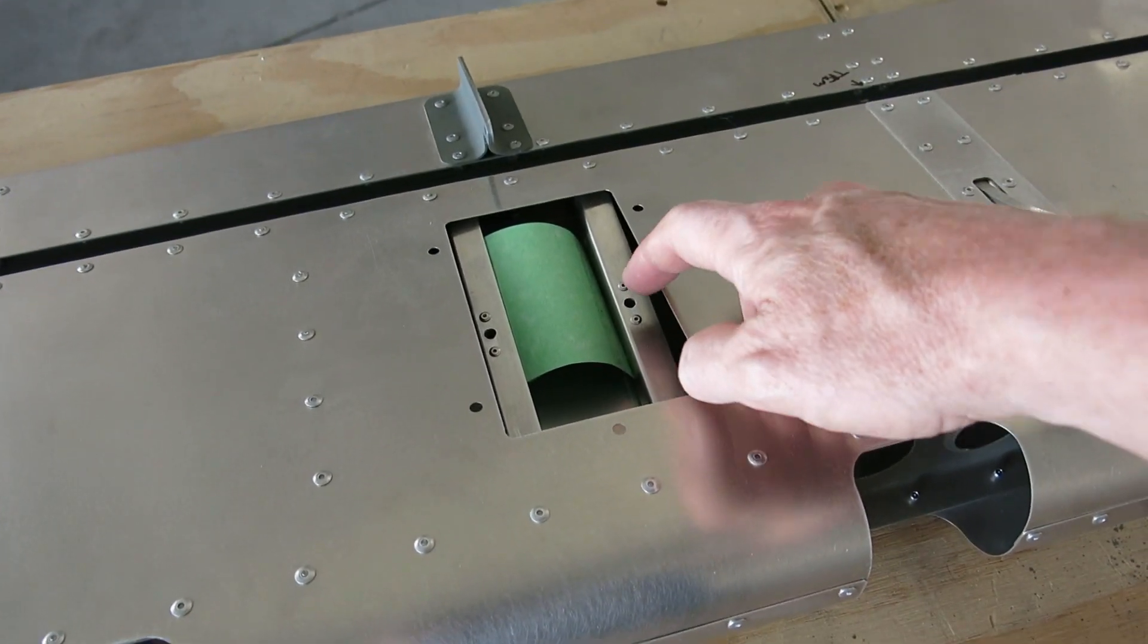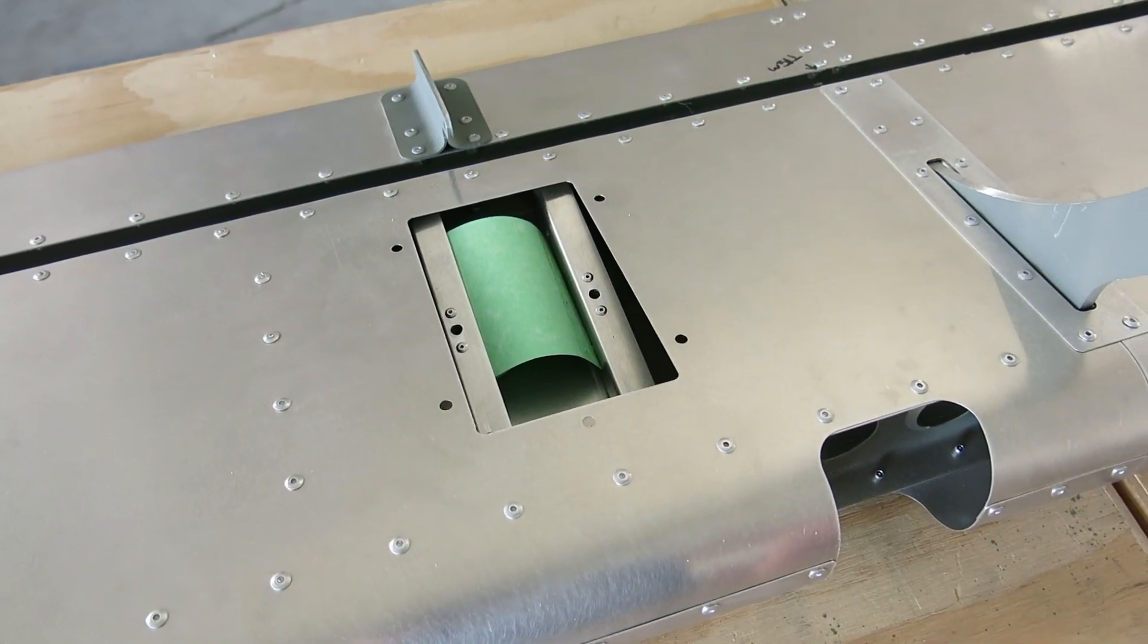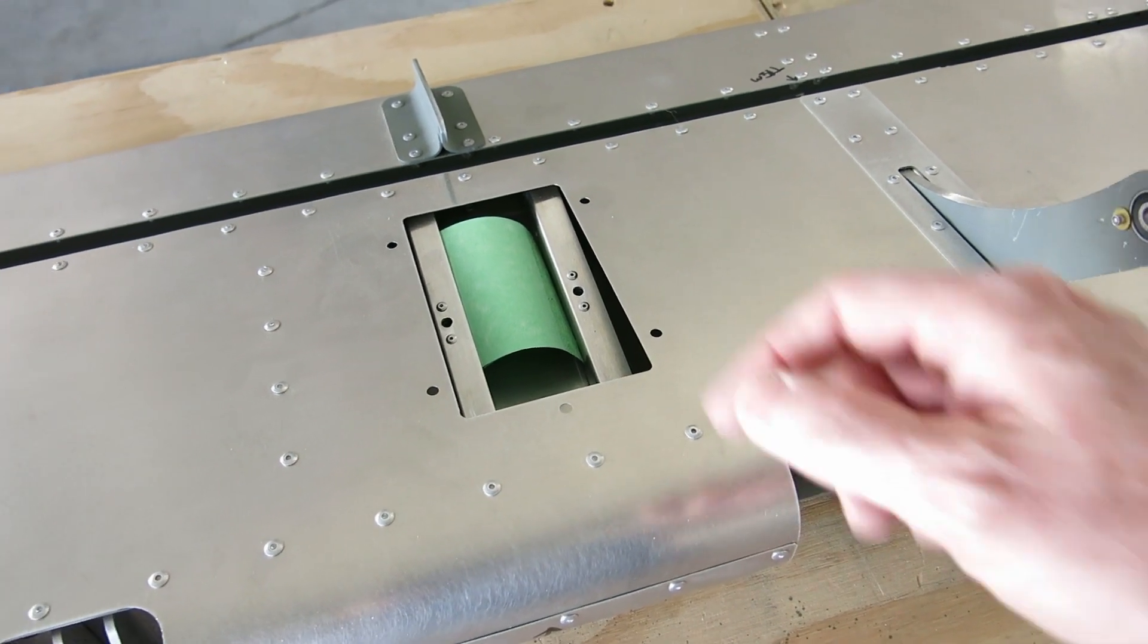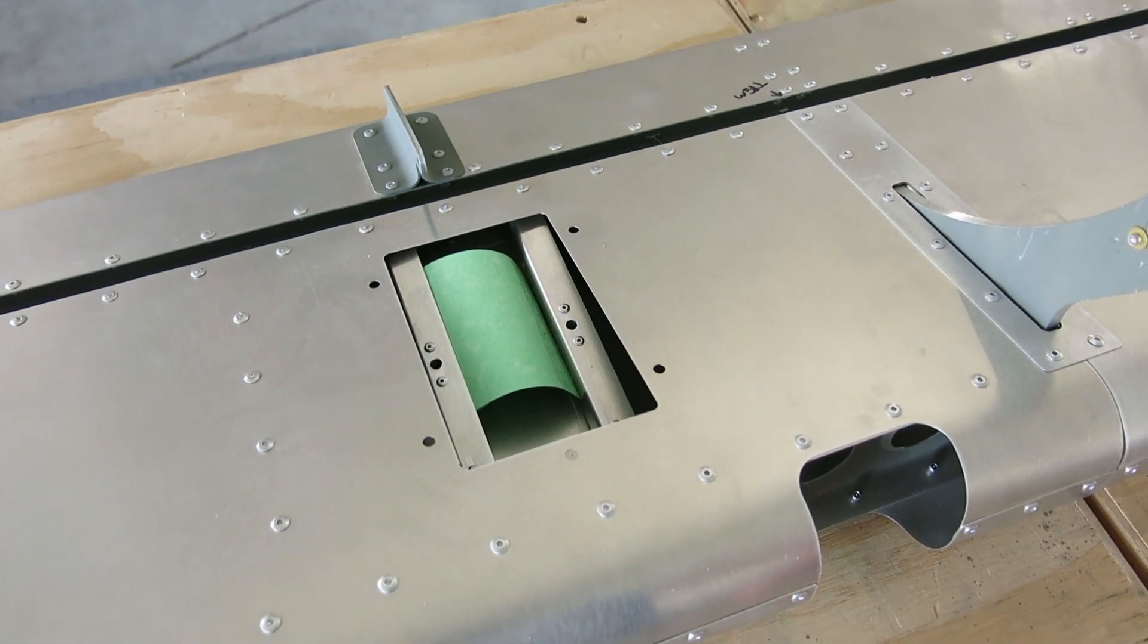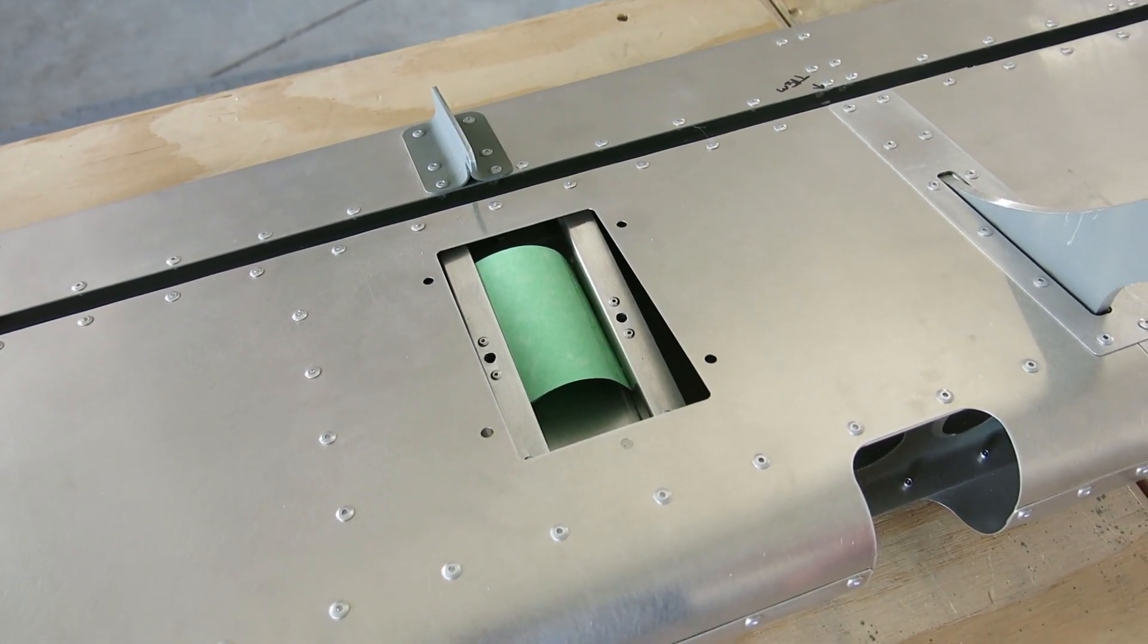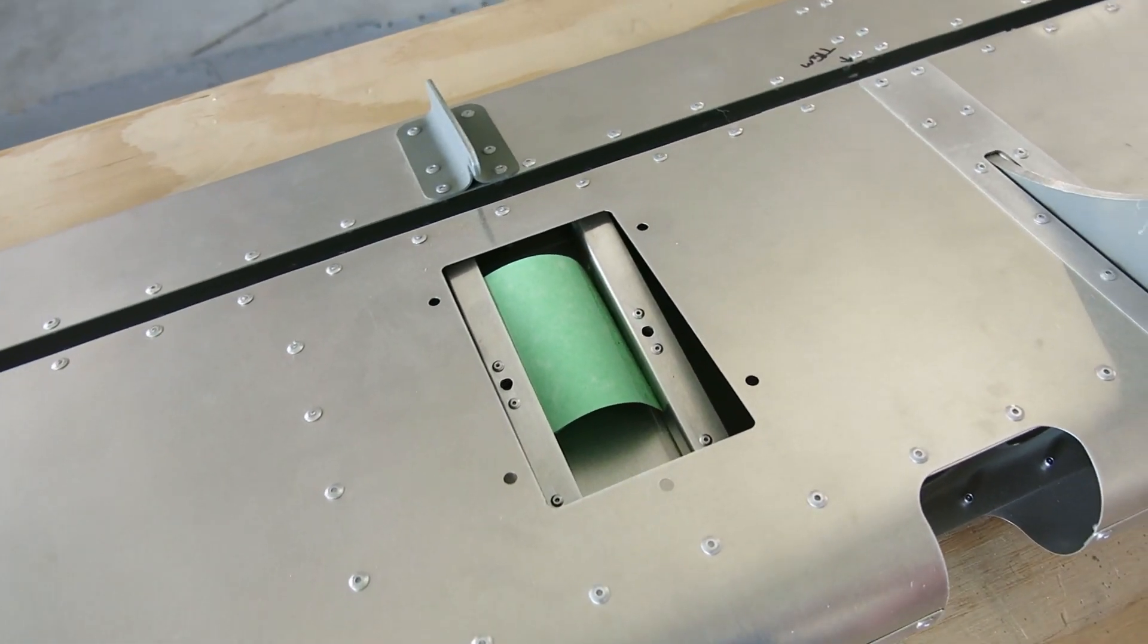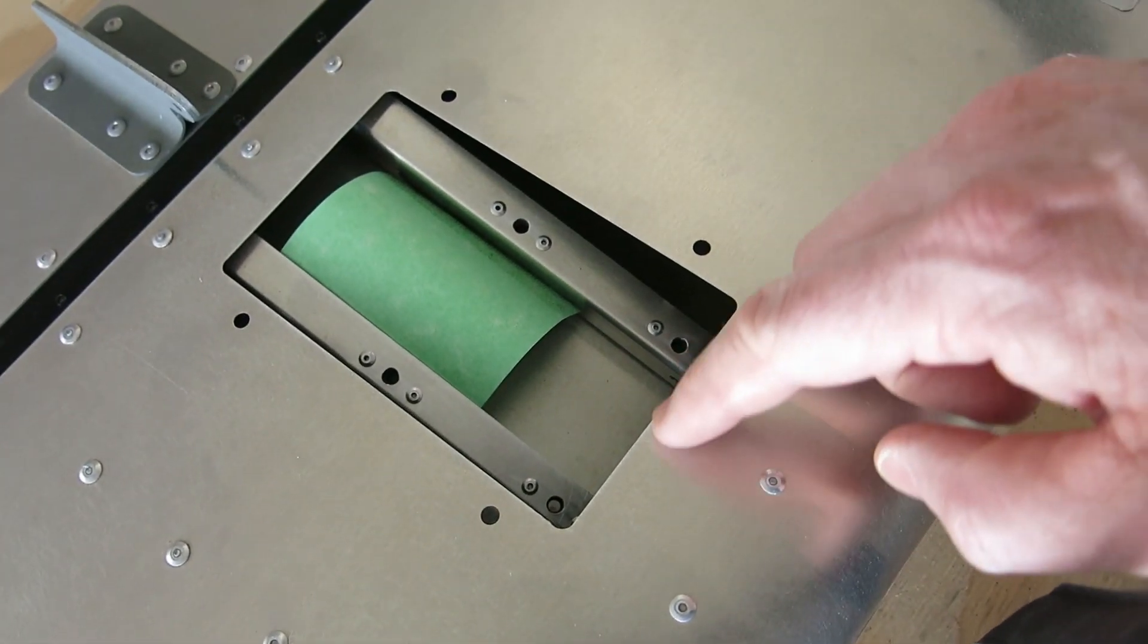The company that supplies the actual servo, Ray Allen, in their directions they imply that the holes on the corners of the servo shouldn't be bigger than a number six screw, but it calls for a number eight in the Rans instruction. I emailed Rans and they said they use a number eight, but I think I still want to use a number six.